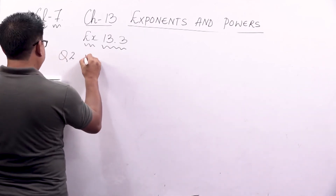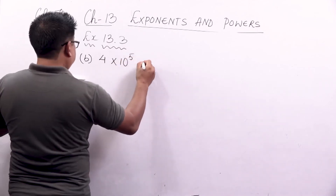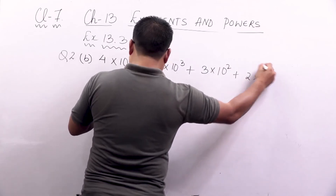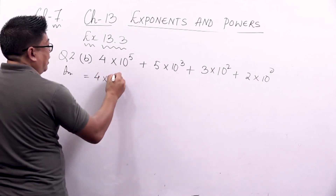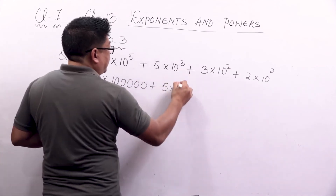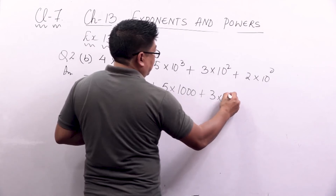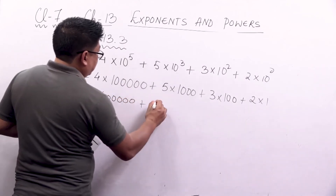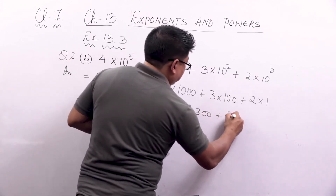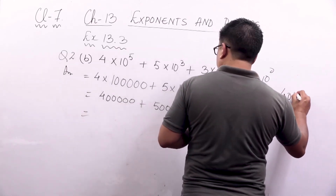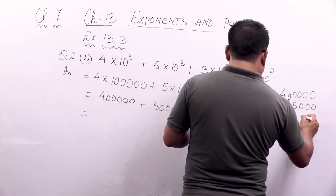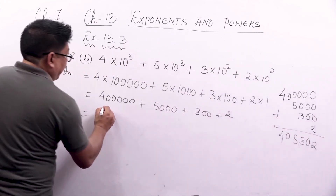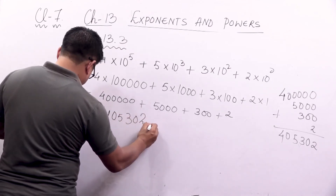The next question is B: 4 into 10 to the power 5, plus 5 into 10 to the power 3, plus 3 into 10 to the power 2, plus 2 into 10 to the power 0. This I can write as: 4 into 5 zeros gives 400000, plus 5 into 3 zeros gives 5000, plus 3 into 2 zeros gives 300, plus 2 into 1 gives 2. Adding all gives the final answer: 405302.